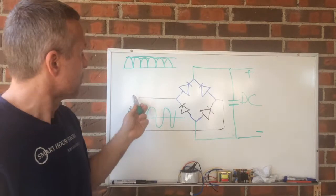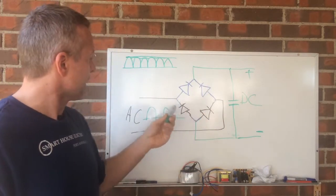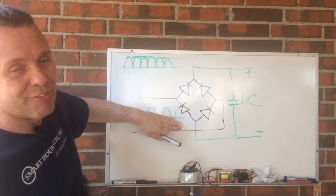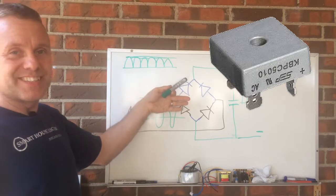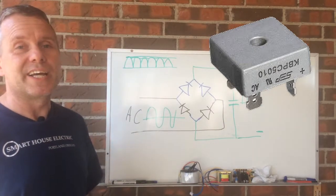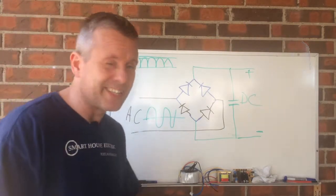So this is what the bridge rectifier does. It simply takes the negative side of the AC and flips it up next to the other positive, and it becomes essentially a DC voltage. Here's Ken from Tanning Bed Repair Guide, take care guys.